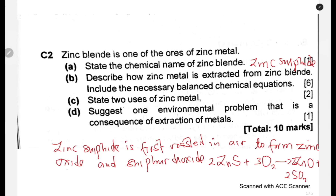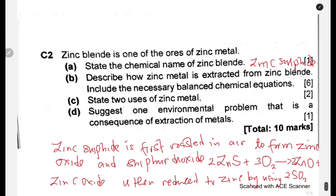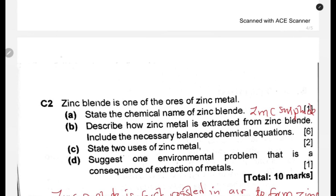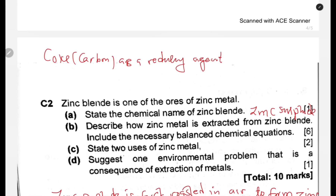For the second part: zinc oxide is then reduced to zinc by using coke — which is carbon — as a reducing agent. Then you write the chemical equation: zinc oxide plus carbon, at high temperature, forms zinc plus carbon monoxide. You'd have described the whole process, but if you want, you can start from where zinc sulfide is first crushed, then the frothing agent is added, then roasting.